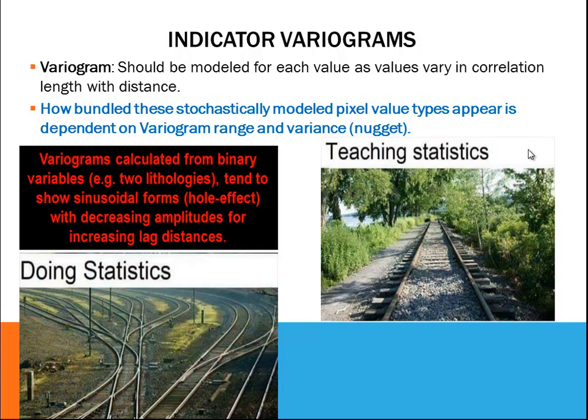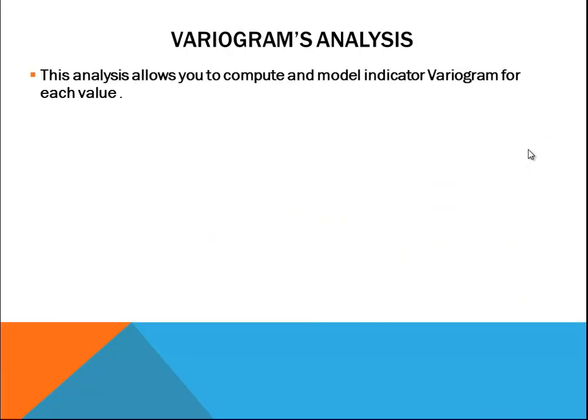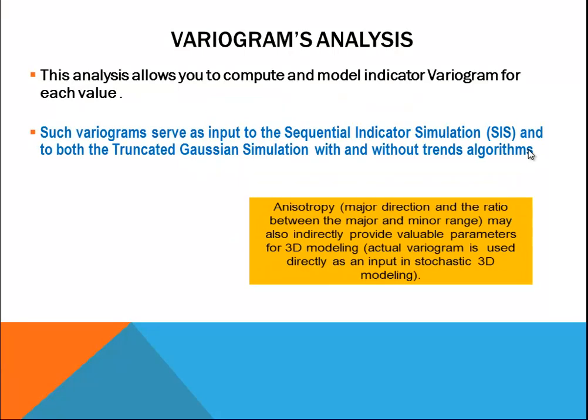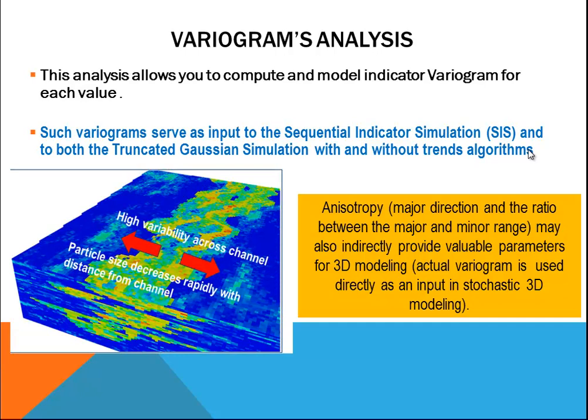Some analysis of variogram. Anisotropy is a characteristic of a data set if there is a clear difference in how data values change in a preferred direction. If you suspect this kind of directional bias in your data set, incorporate that information in the variogram to get a more accurate model. The variability of particle size across the channel will be much higher than along the channel.